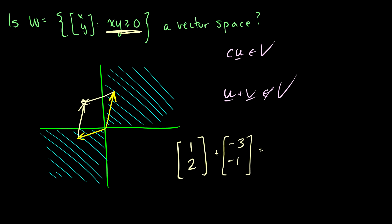So this is going to give us negative two and one. And we can see here that our x times y here is definitely not greater than zero. Therefore, this is also not a vector space.